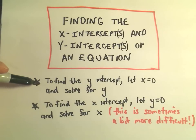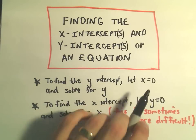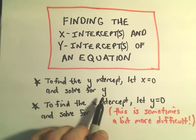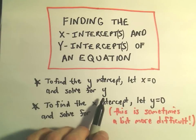The basic idea: to find the y-intercept, we just plug in x equals 0 and then solve for y. This is usually pretty easy, it's just arithmetic.